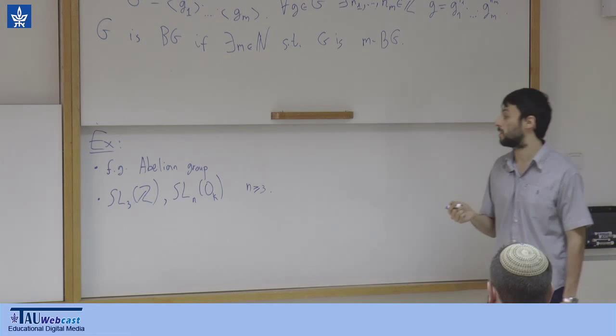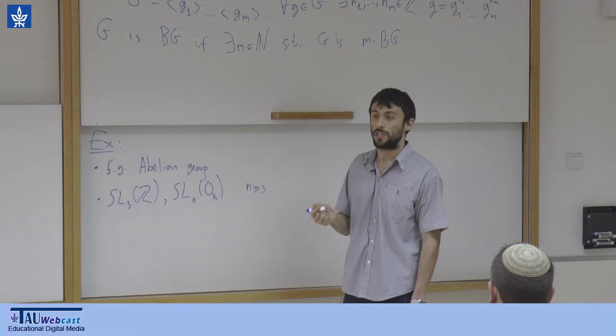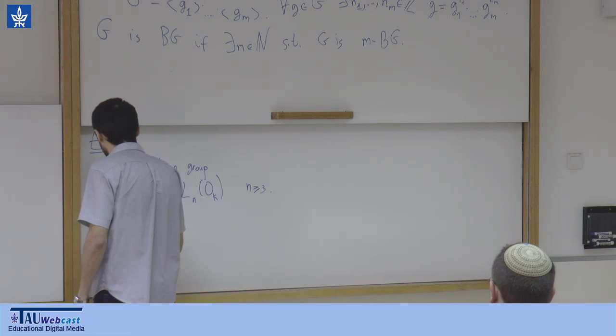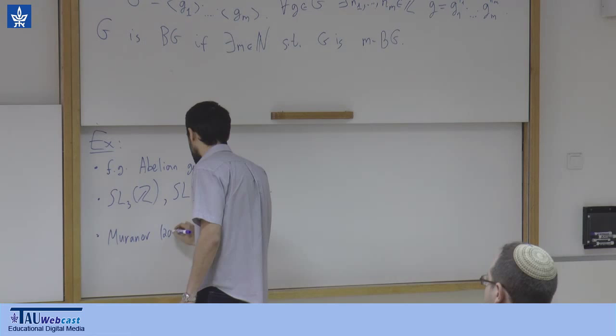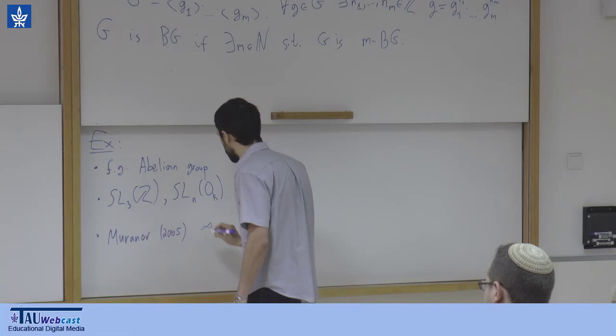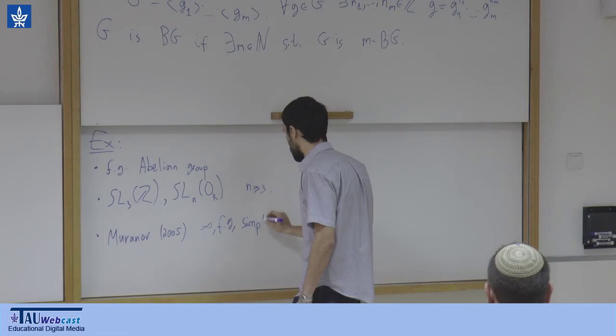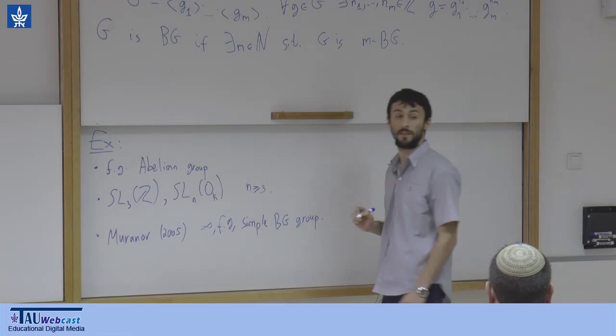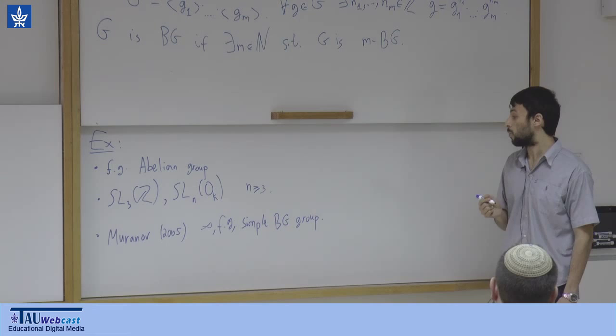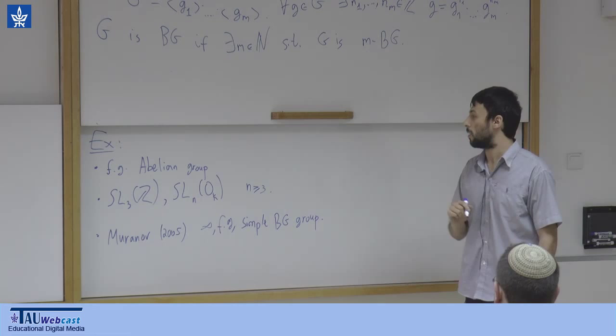It's important to know that not all boundedly generated groups are as nice as linear groups or abelian groups. There is a very interesting example of Muranov from 2005, which constructed an infinite, finitely generated, simple, boundedly generated group. So there exists a simple group — which is the most complicated kind — which is boundedly generated. I find it a bit surprising.